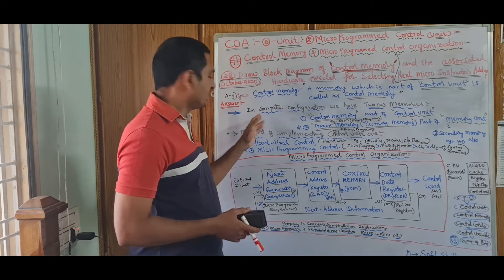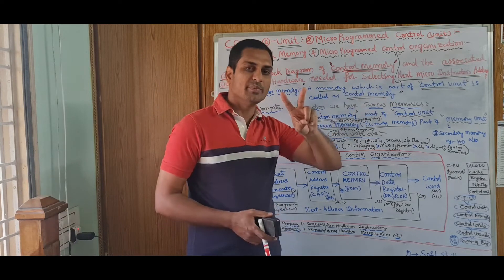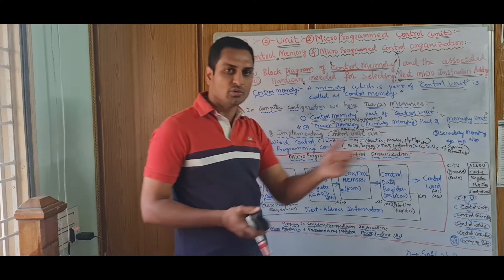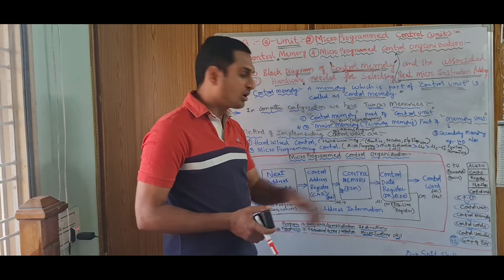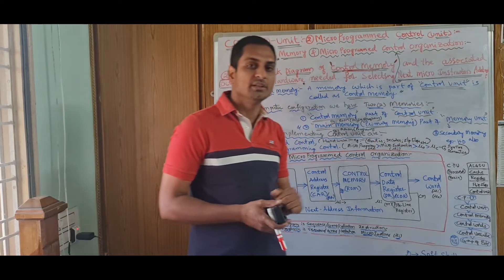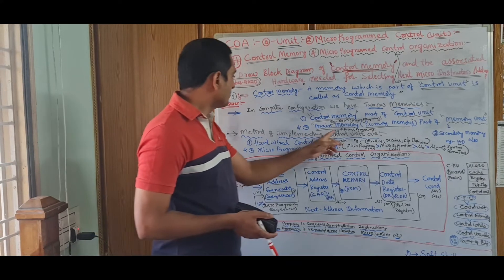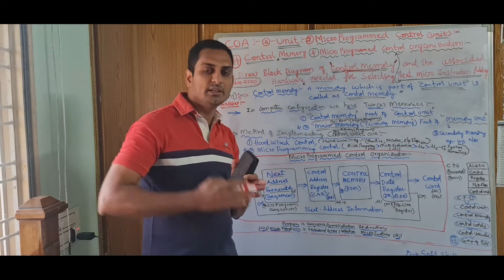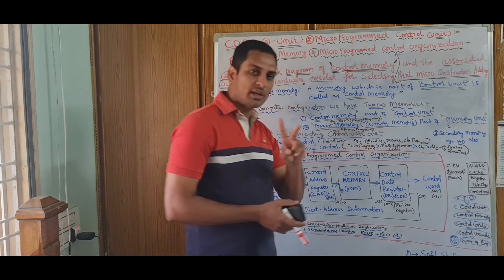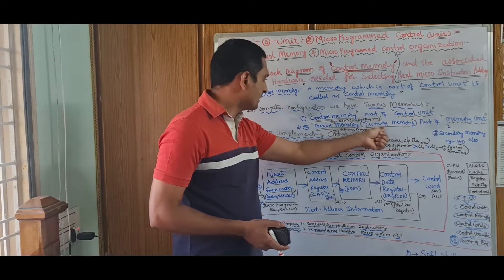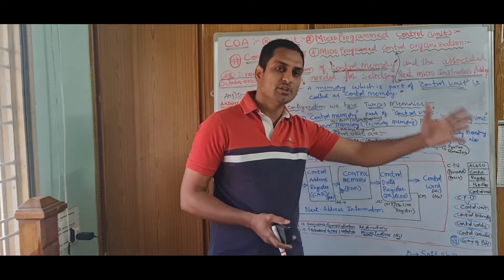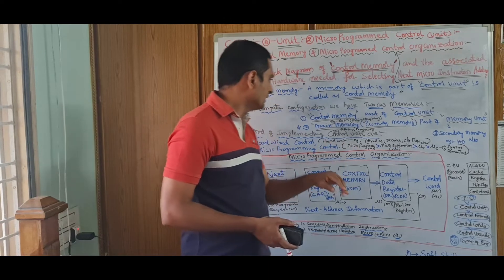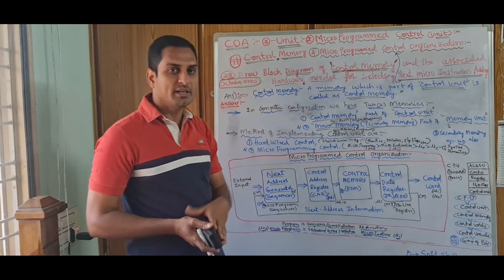In computer configuration we basically have two memories. First, control memory — which is part of the control unit. Second, main memory — also called primary memory — which is part of the memory unit. An example of main memory is RAM. In RAM we write programs in C, C++, Java. When we save, it is sent to secondary memory, such as hard disk, external hard disk, DVD, compact disk, pen drive, floppy, and so on.